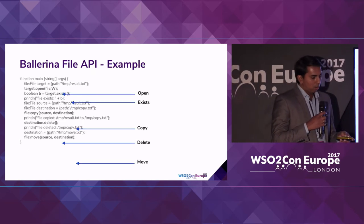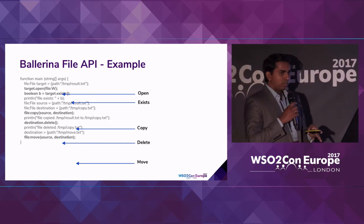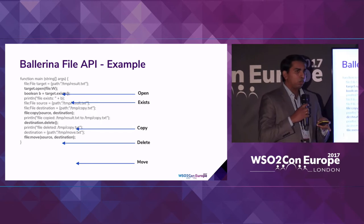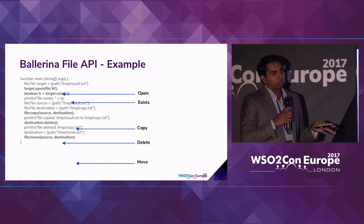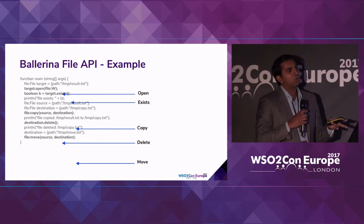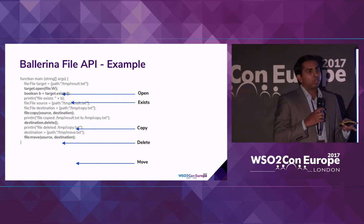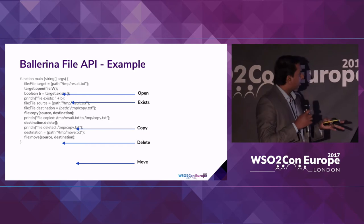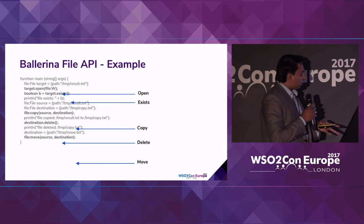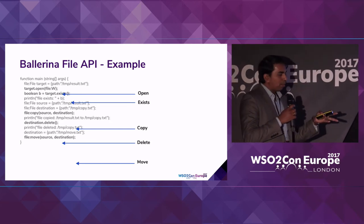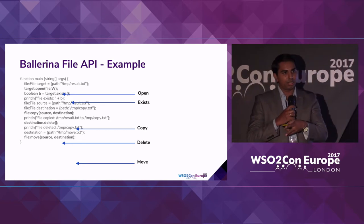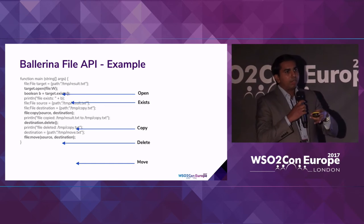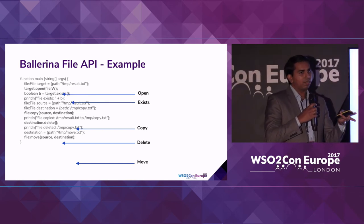Here is an example of the existing file API. We have given the file path, and by creating a file object you can first open the file. Based on your requirement you may open the file for reading or writing — you can specify what mode you want. You can also check the existence of the file. We also provide coarse-grained capabilities like copying a file from one location to another or moving a file from one location to another.